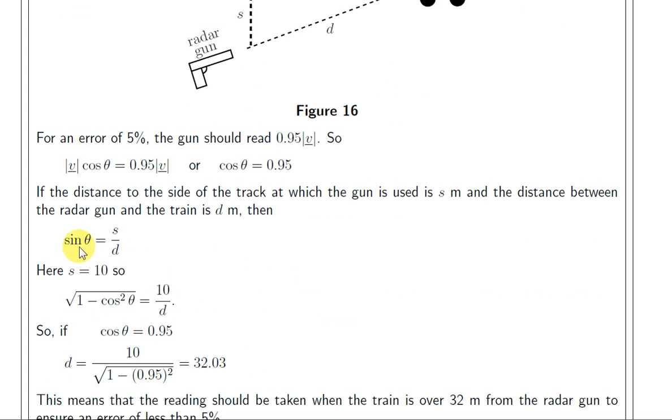Now, we can use a famous identity here. The identity says that sine squared theta plus cos squared theta equals 1. And if we rearrange that, we get sine theta equals root 1 minus cos squared theta. We want to solve for D, so we can interchange D and this square root term to get this here. And we have that cos theta is 0.95, plug that in. And if we work that out, we get 32.03.